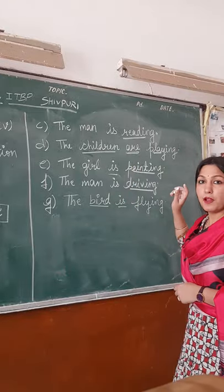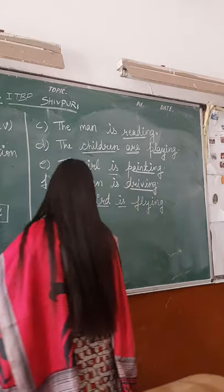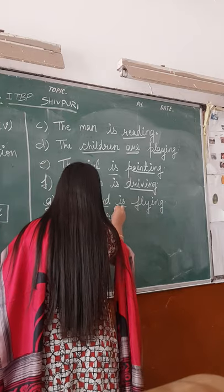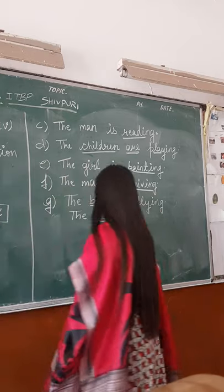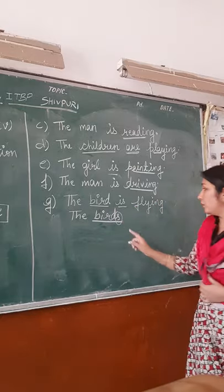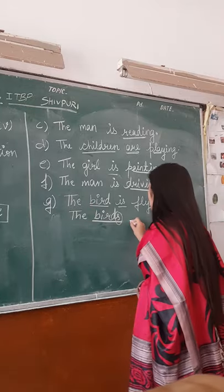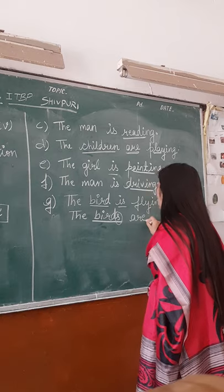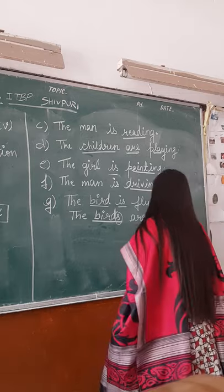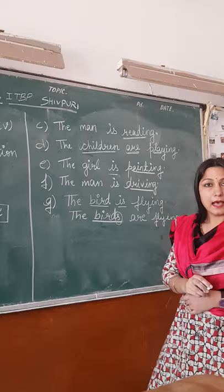For more than one — suppose two, three, four birds — you will write 'the birds.' What is the meaning of this 'S'? Many. This is a single word; these are many words. So you will write 'the birds are flying.'